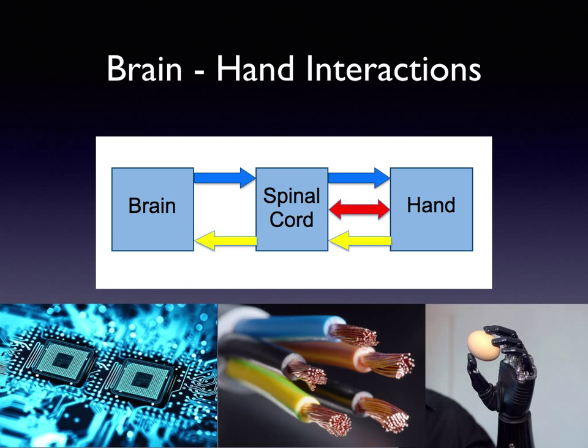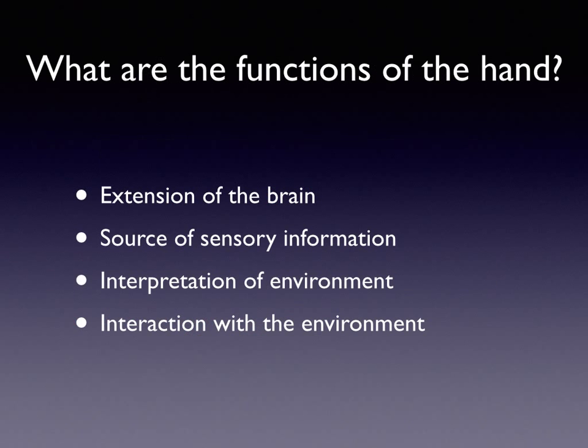The brain interacts with the spinal cord in the hand, and the hand interacts with the brain through the spinal cord. But the hand can also interact with the spinal cord without involvement of the brain directly. The hand's functions — in the same way that all of our senses are really extensions of the brain (so for instance, the retina is an extension of the brain providing sensory visual information) — the hand is providing sensory cutaneous information to the brain. But the hand also allows us to interpret our environment.